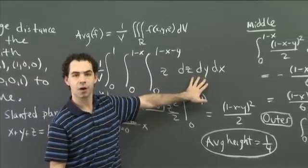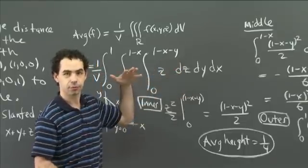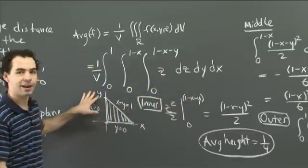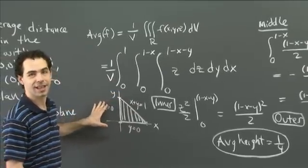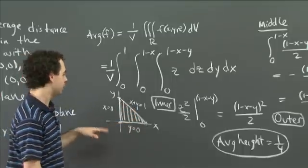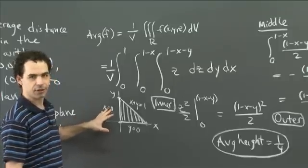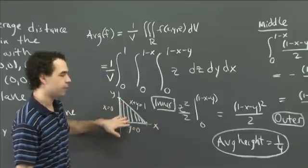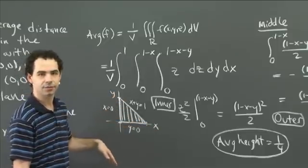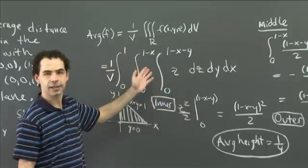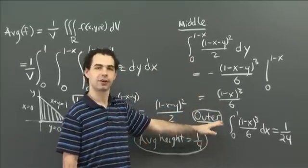For the next variable y, we projected the region down to the xy plane, drawing the shadow of the region — the triangle with vertices (0,0), (1,0), (0,1). We found y goes from 0 to 1 − x for fixed x. The outermost variable x has absolute bounds 0 to 1. Then we evaluated the iterated integral by successive integrations starting from the inside and working outward.